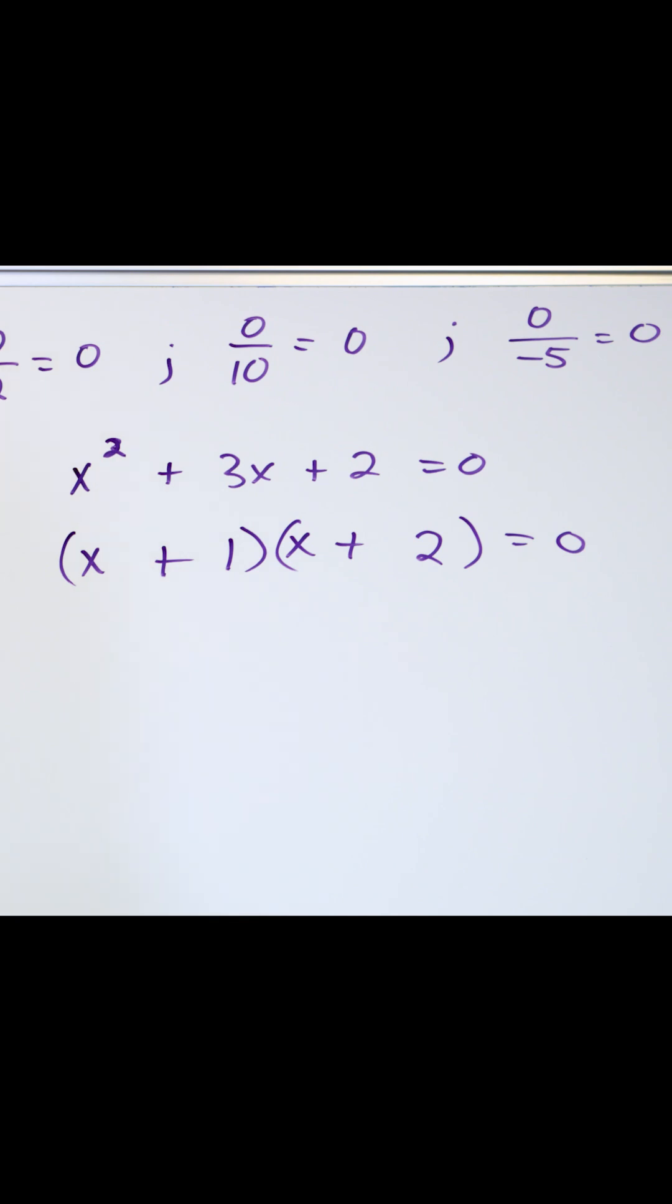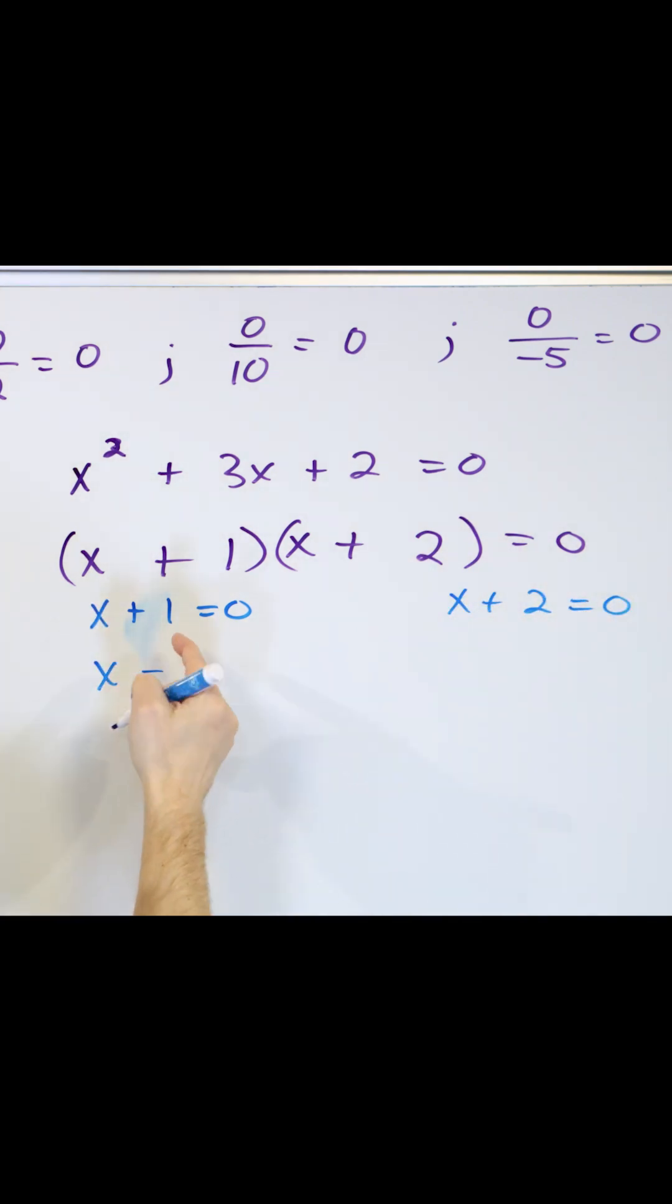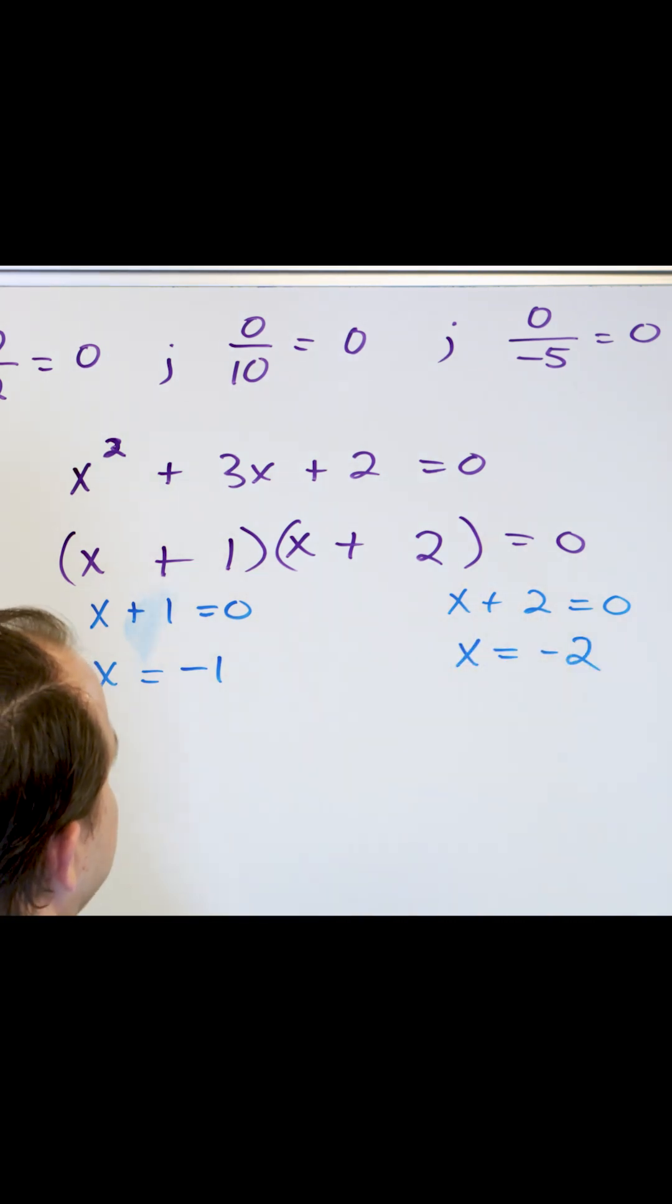What values of x actually make this thing go to zero? Well, this one means x plus 1 can be equal to zero, x plus 2 can also be equal to zero, so that means x can be, move this over, negative 1, x over here can be equal to negative 2.